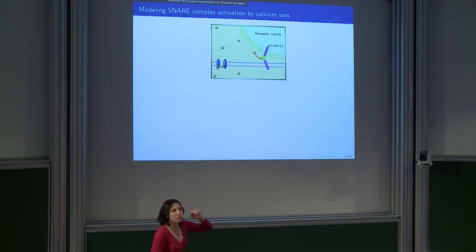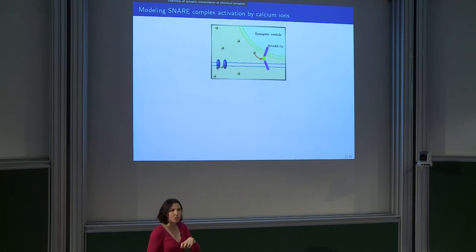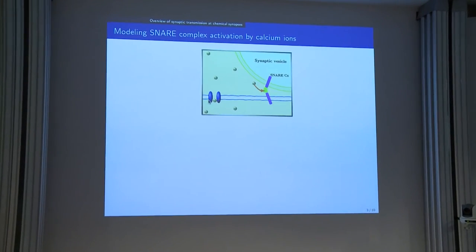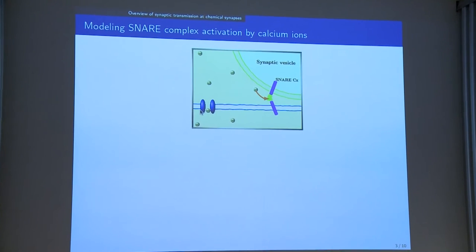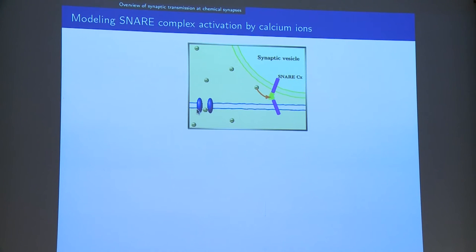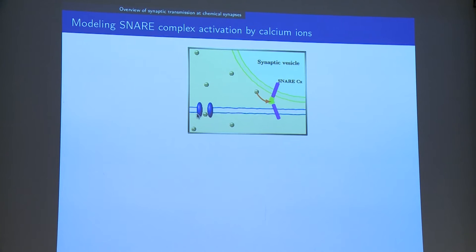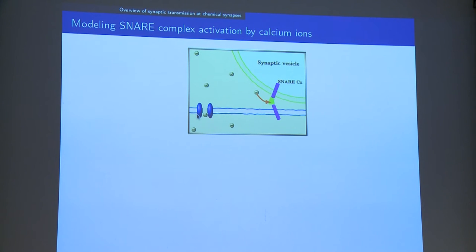Zooming in: the docked vesicles are attached to the membrane through the SNARE complex, which is a complex of proteins. On the SNARE complex, you have the receptors for calcium. Calcium enters through the blue channels, then diffuses. If around four to eight calcium ions find the receptors, the synaptic vesicle will fuse with the membrane, and then everything will start for the transmission.